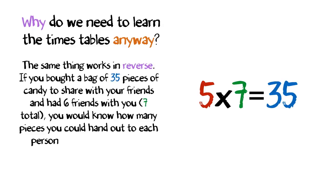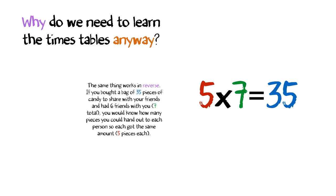The same thing works in reverse. If you bought a bag of 35 pieces of candy to share with your friends and had 6 friends with you, 7 total, you would know how many pieces you could hand out to each person so each got the same amount, 5 pieces each.